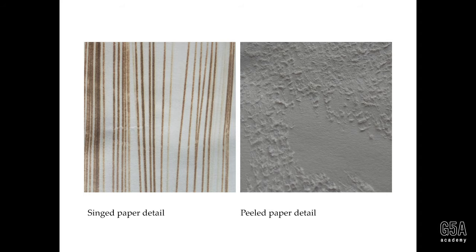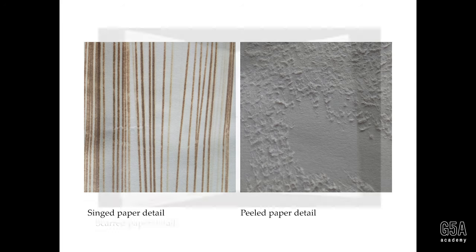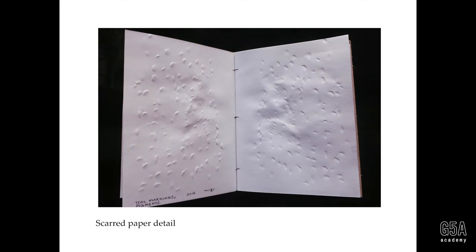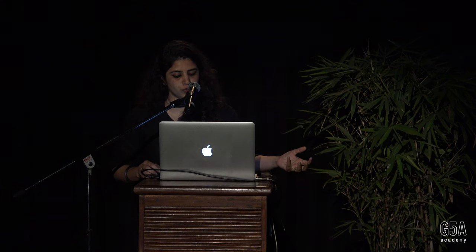Some examples of the pre-processes I do with the paper: there are singed lines, and on the right-hand side is where I'm peeling the paper out. Another example is bruising the paper with different tools and making a ground for the drawing to go forward from there.